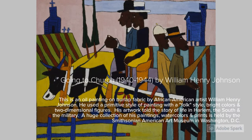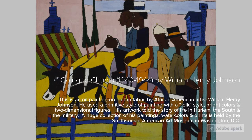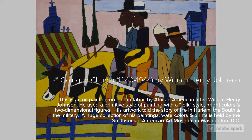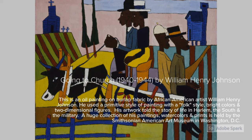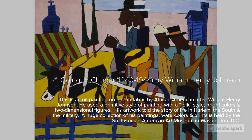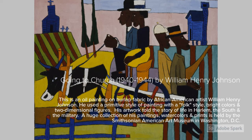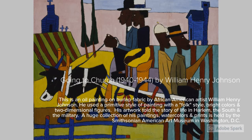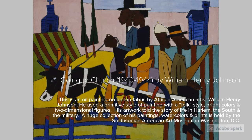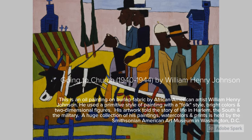This is an oil painting on burlap fabric called Going to Church by African-American artist William H. Johnson. He used a primitive style of painting with a folk style, bright colors, and two-dimensional figures. His artwork told the story of life in Harlem, the South, and the military. A huge collection of his paintings are in the Smithsonian American Art Museum in Washington, D.C.